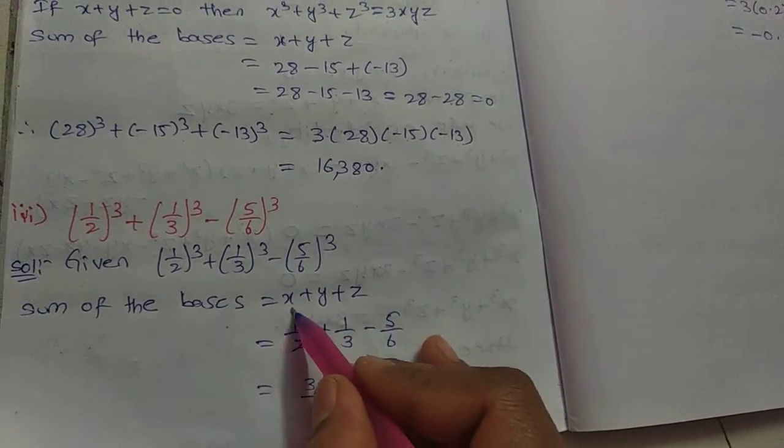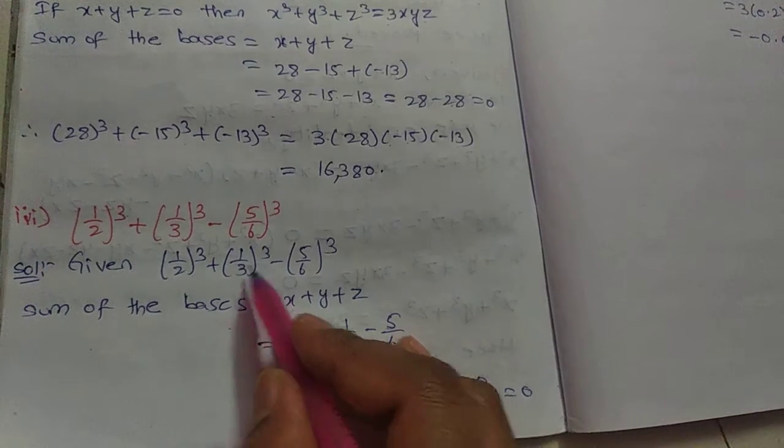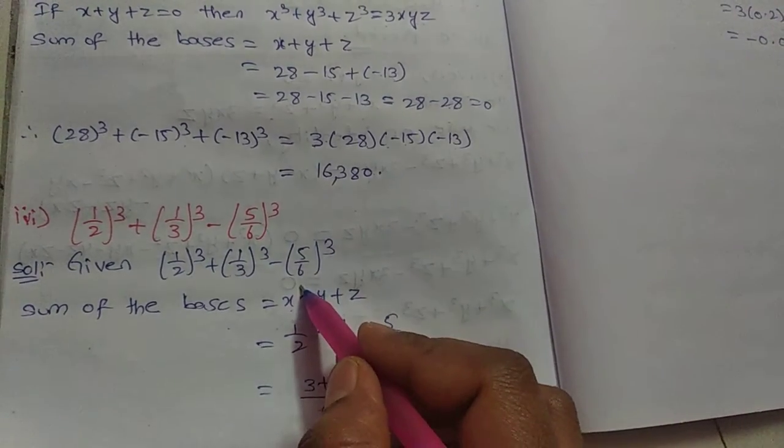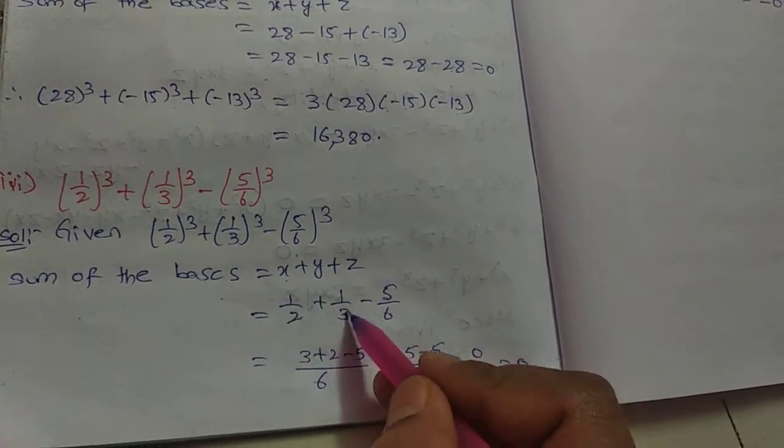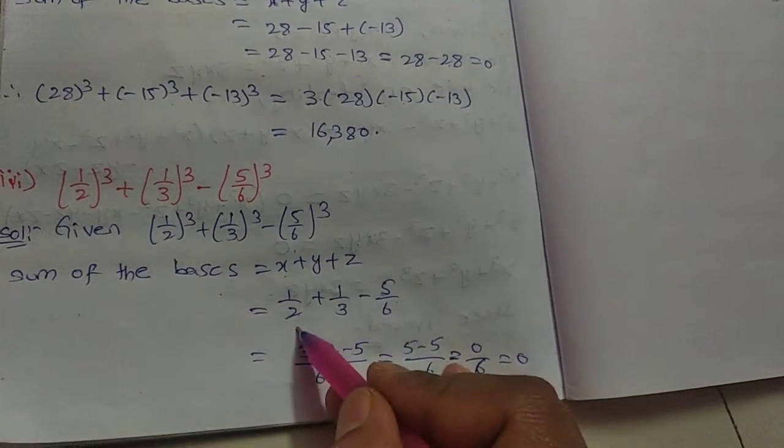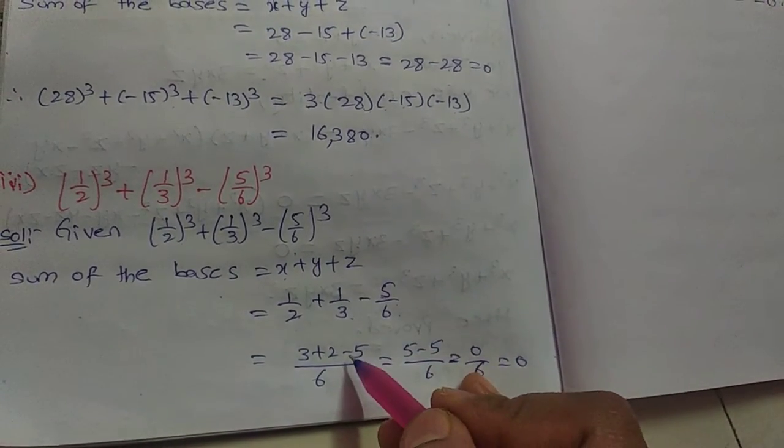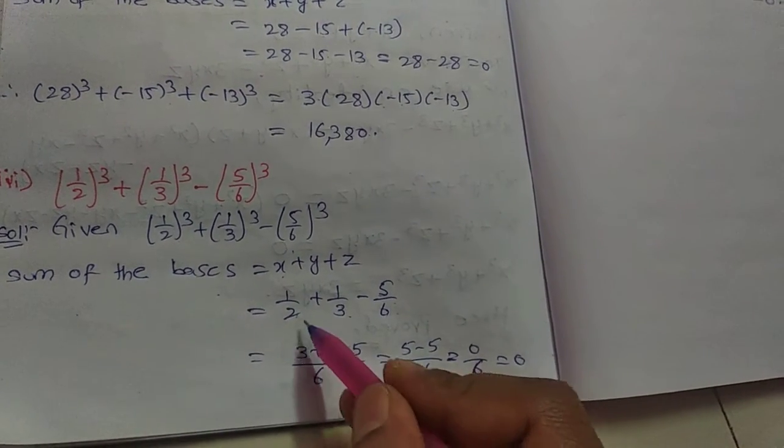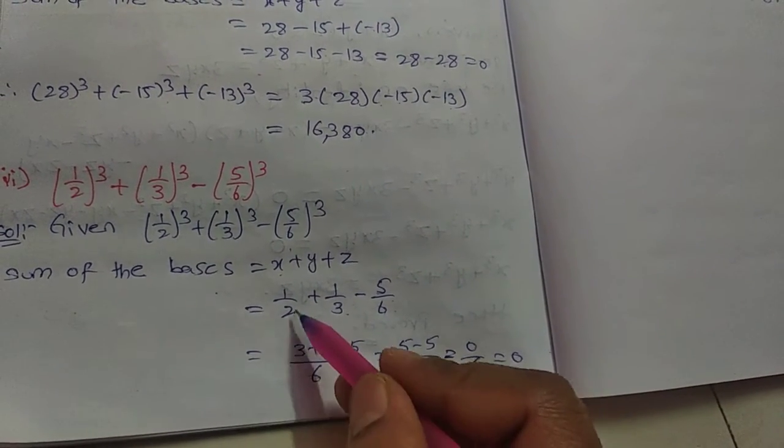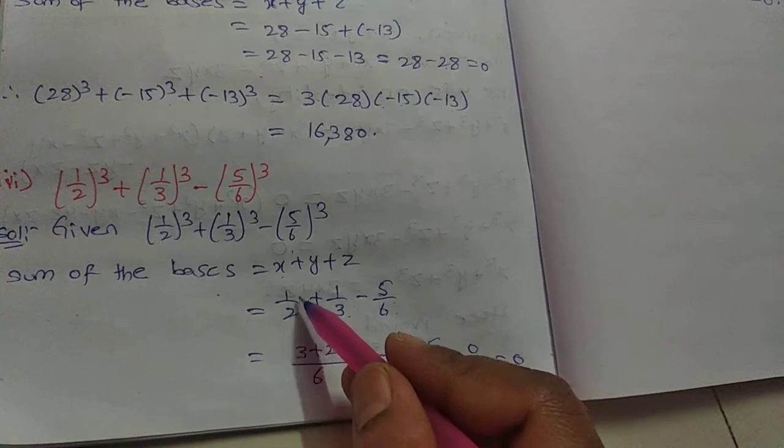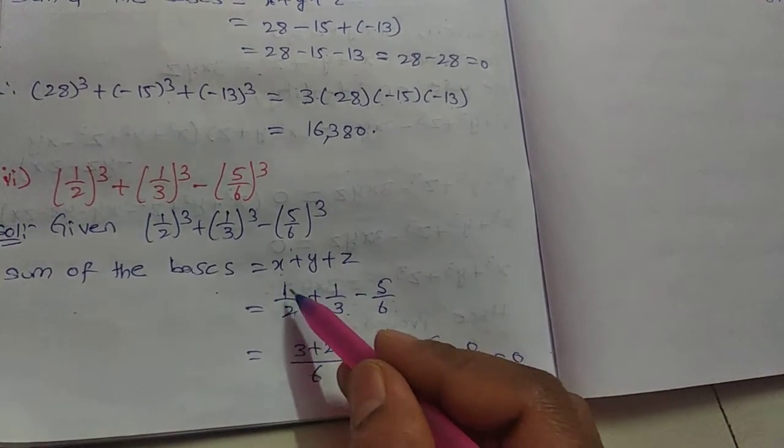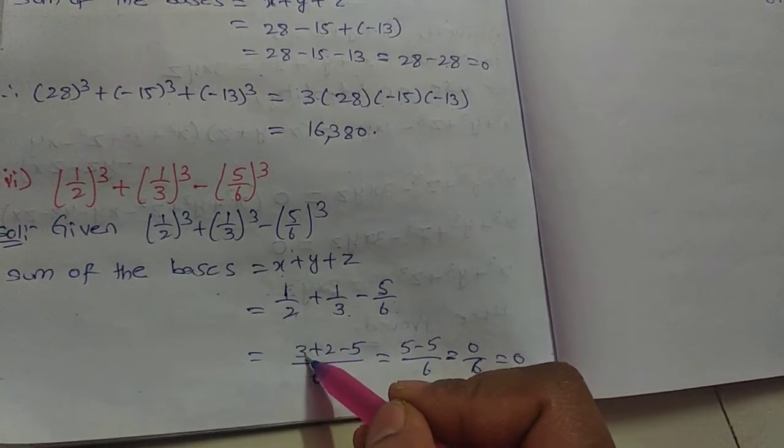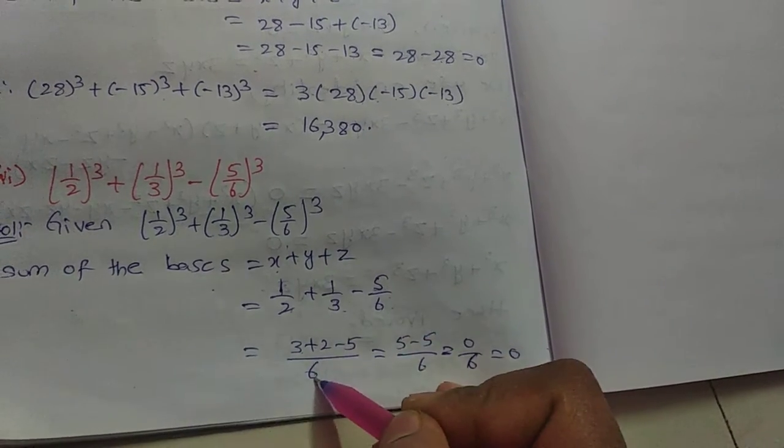x + y + z: here x value is 1/2, y value is 1/3, and z value is -5/6. So 1/2 + 1/3 - 5/6. The denominators are different, so we take the LCM of 2, 3, and 6, which is 6. For the first fraction, multiply by 3: 1 × 3 = 3.